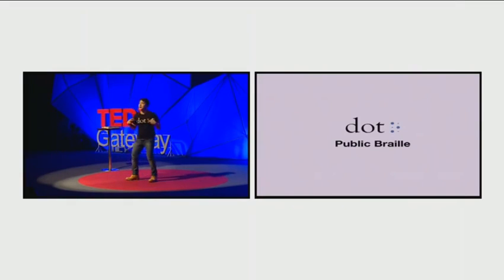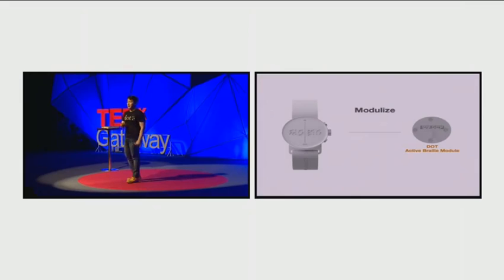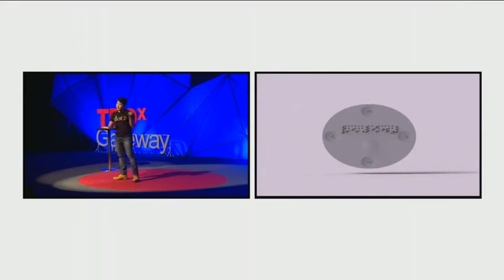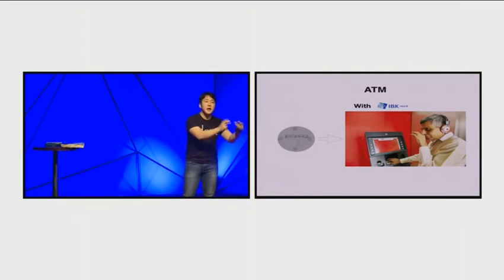We brought this idea into public places too. Change the way of accessing public data for blind people. So we modularized our technology. It looks like this. Many blind people have a hard time using ATMs right now. But we put this device on the ATM, they can really easily use it. We cannot memorize our account number, right? They have so much hard time, but we can help them.